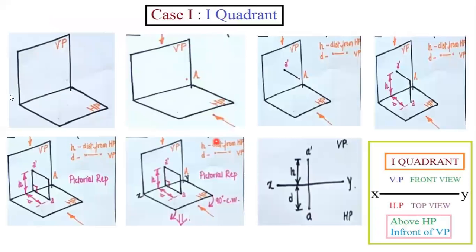So just consider the first quadrant. Take your book: keep the left-hand side vertical and for the right-hand side divide the book into two halves — keep the left half vertical and try to keep the right half horizontal. This is the divided line and this is the reference line. Whichever part you are keeping vertical is the vertical plane and whichever is horizontal is the horizontal plane.